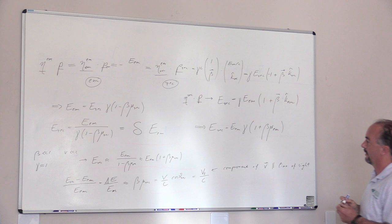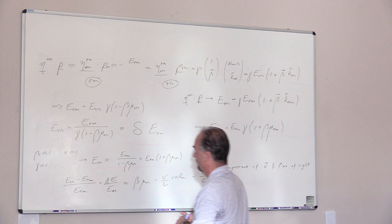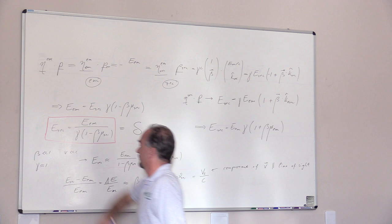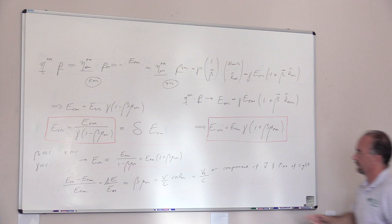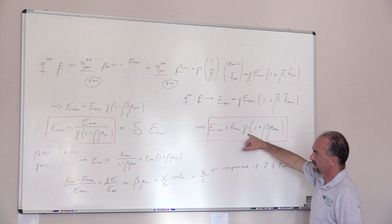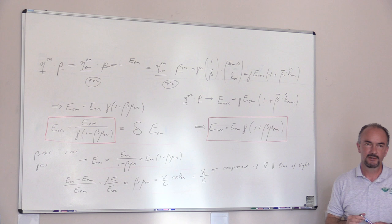So that also means that E in the receiver is E emitted times γ times 1 plus βμ in the emitter's frame. Now, but these two are better for the same, right? We have our Doppler shift considering this, and we have another expression for the Doppler shift considering that. And those two look kind of different. 1 over γ times 1 minus βμ and times γ times 1 plus βμ. Generally, those are not the same.